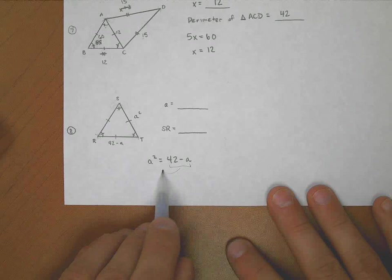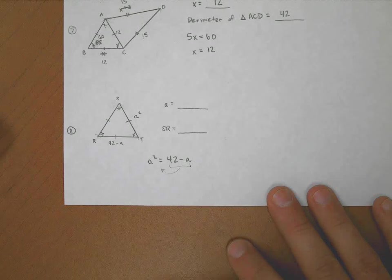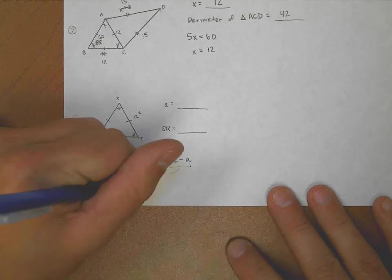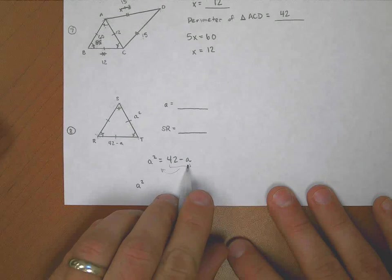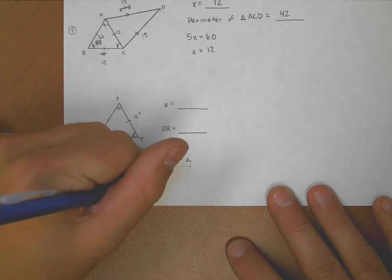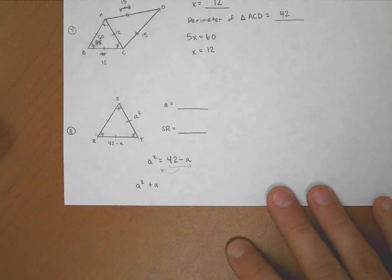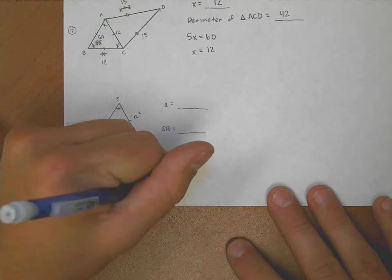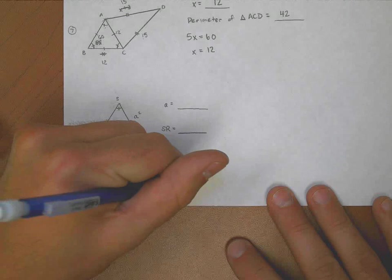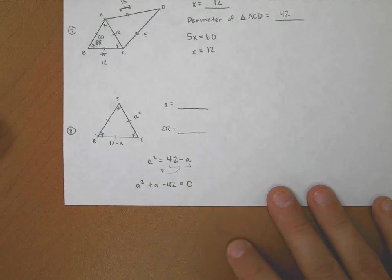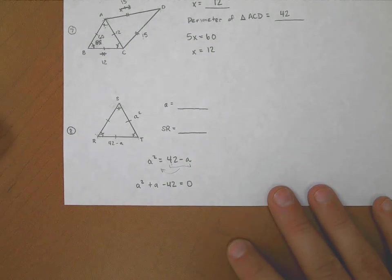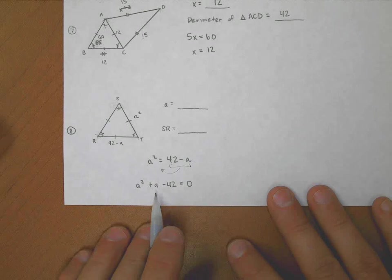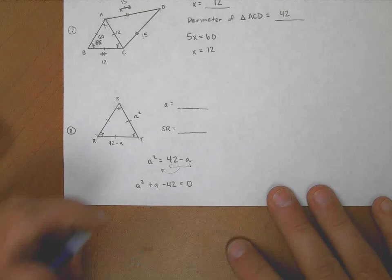Step one, let's get this stuff over on the left side with the a squared. So I'm going to add a to both sides. I'm going to add a over here. I'm going to subtract 42 from both sides. And after I've done that, I don't have anything left on the right hand side. So I've just rearranged this equation.